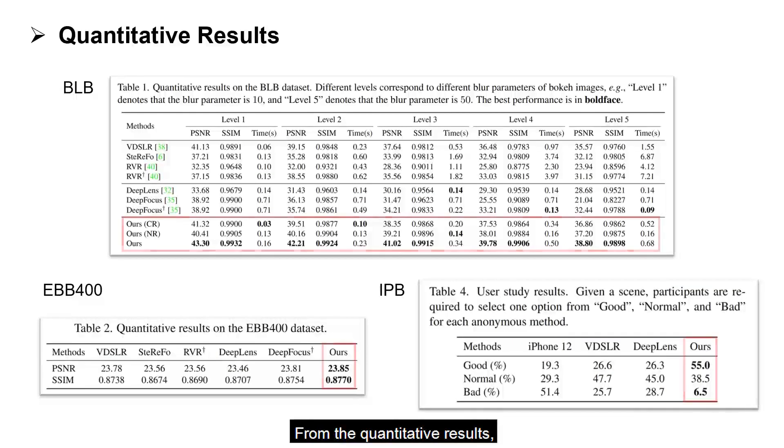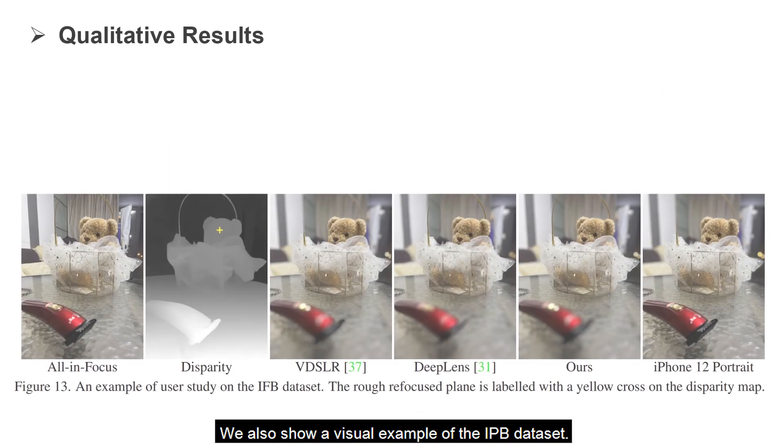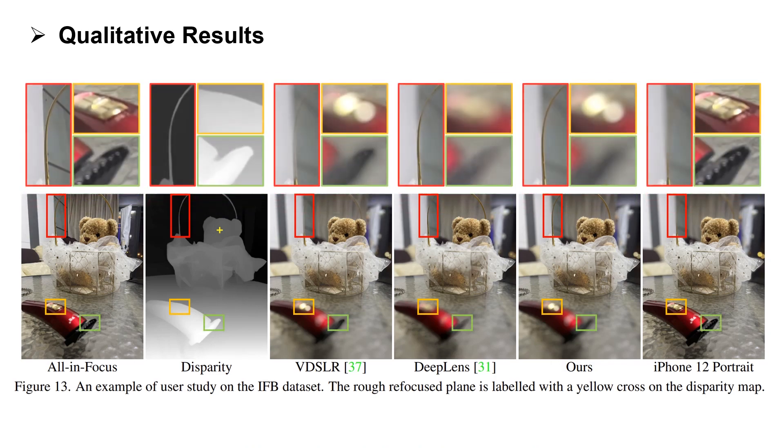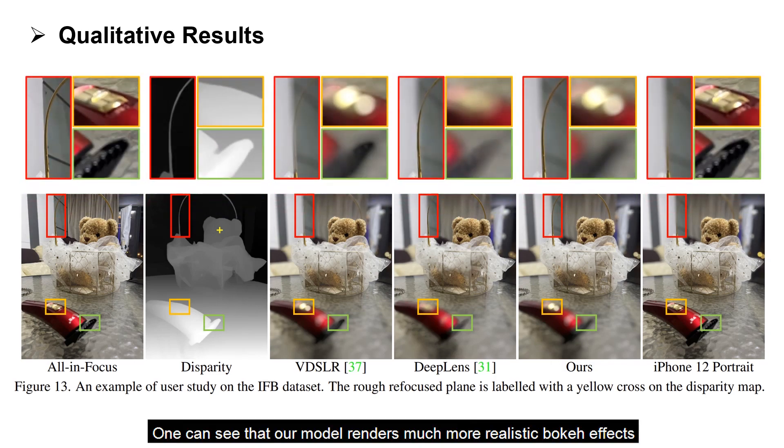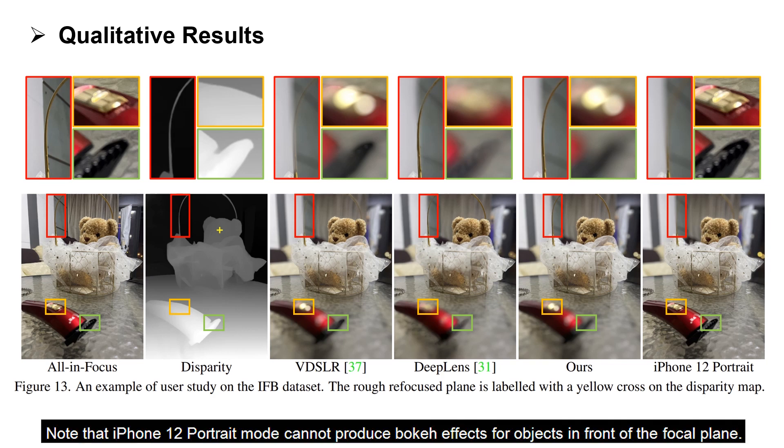From the quantitative results, our approach achieves the best performance compared with other SOTA methods. We also show a visual example of the IPB dataset. One can see that our model renders much more realistic bokeh effects at both object boundaries and out-of-focus areas. Note that iPhone 12 Portrait Mode cannot produce bokeh effects for objects in front of the focal plane.